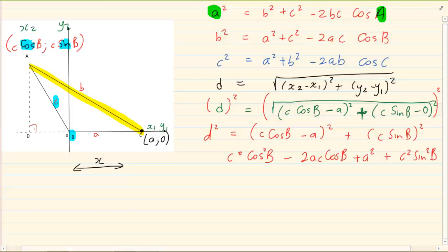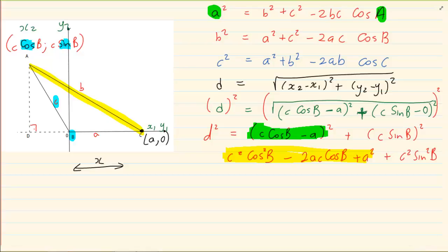Now again, I am telling you that how did I get this part? By doing the kitty cat or FOIL method of this. Right, now what do we have? We have a cos squared B and we have a sin squared B.